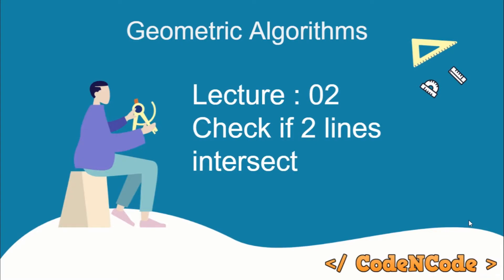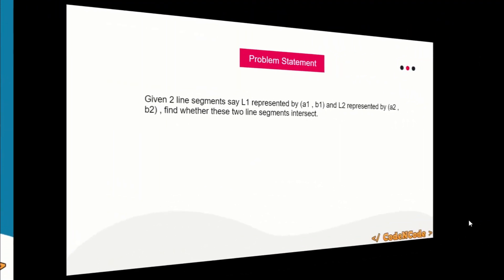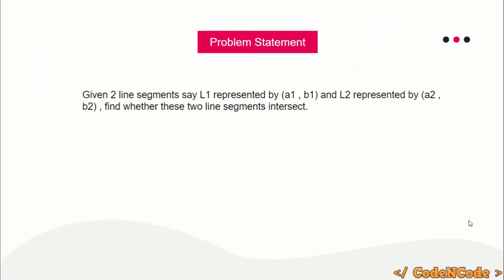Hello guys, this is Code in Code and this is the second lecture of the geometric algorithm series. In this lecture we will see how you can find out whether two given line segments actually intersect or not. The problem statement is simple: you are given two line segments L1 and L2. L1 is represented by points A1 and B1, and L2 is represented by points A2 and B2 in two-dimensional space. Find out whether the two line segments actually intersect or not.